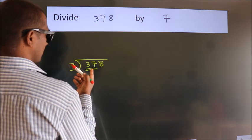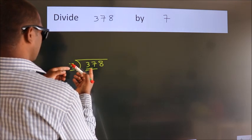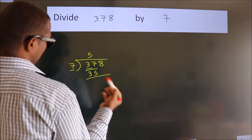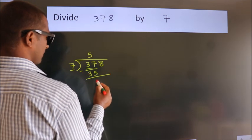A number close to 37 in the 7 table is 7 fives, 35. Now we should subtract. We get 2.